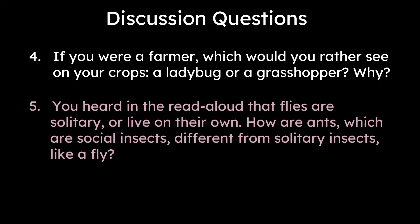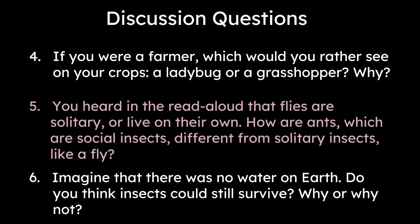You heard in the read aloud that flies are solitary, or live on their own. How are ants, which are social insects, different from solitary insects like a fly? Imagine that there was no water on earth — do you think insects would still survive? Why or why not?